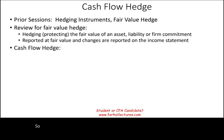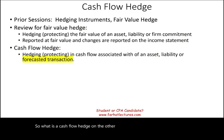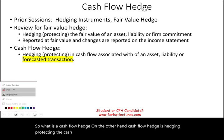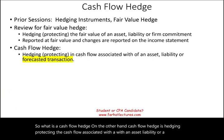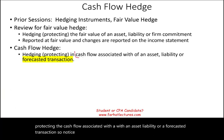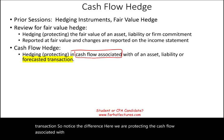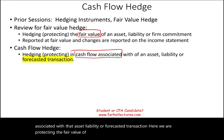What is a cash flow hedge? A cash flow hedge is hedging — protecting the cash flow associated with an asset, liability, or a forecasted transaction. Notice the difference: here we are protecting the cash flow associated with that asset, liability, or forecasted transaction, whereas a fair value hedge protects the fair value of that asset, liability, or firm commitment.